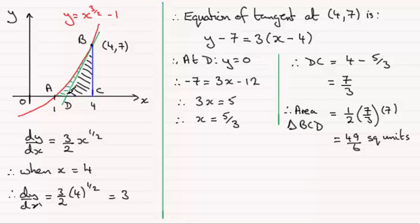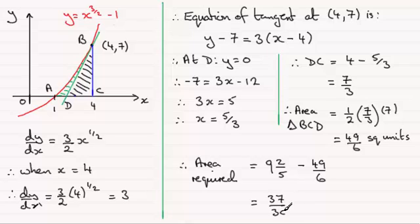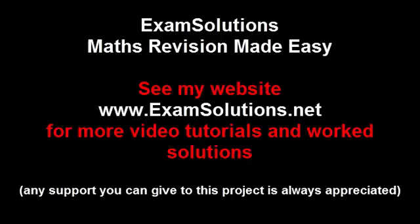So to get the green shaded area, remember the question said hence. So we've got to take the area under the curve between x equals 1 and 4, which we found was 9 and 2 fifths. We've got to take this area away from 9 and 2 fifths. Therefore, the area required is going to be equal to 9 and 2 fifths minus 49 sixths. Work that out and what you've got is 37 thirtieths square units. Thank you.